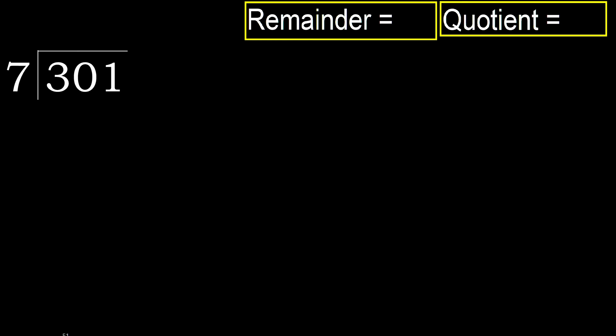301 divided by 7. 3 is less, therefore next. 30 is not less, therefore work with 30.